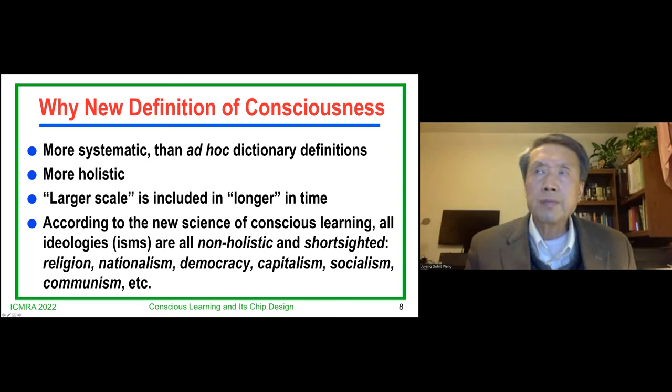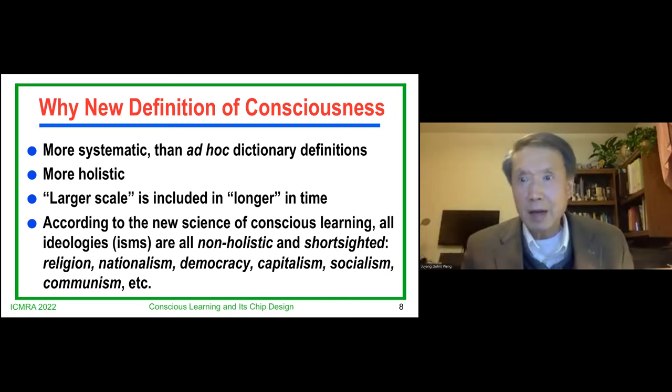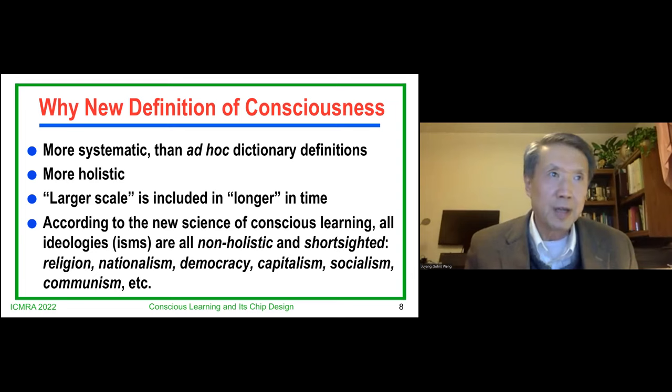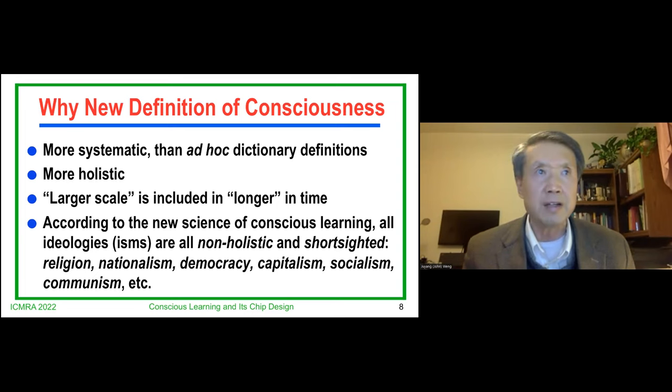This one is very controversial. According to new science of conscious learning, all ideologies or isms are all non-holistic and short-sighted, including our well-respected religion, nationalism, democracy, capitalism, socialism, communism. They are all short-sighted. Why? Because they are called ideologies. If you have a name for certain isms, then the ism is short-sighted. And I wrote a letter to somebody in United States and China, seven days later, somebody in China said that in economy, it should not be based on ideology.